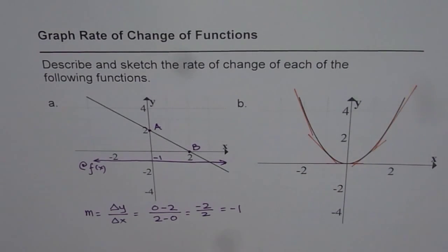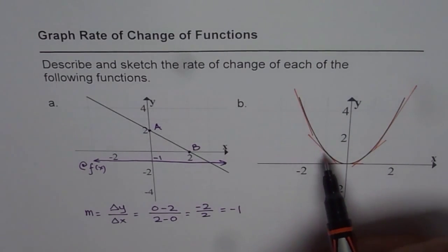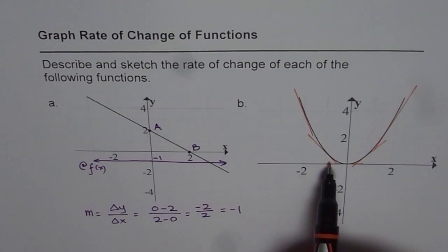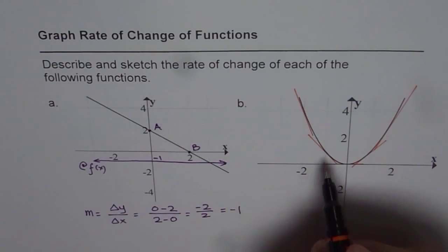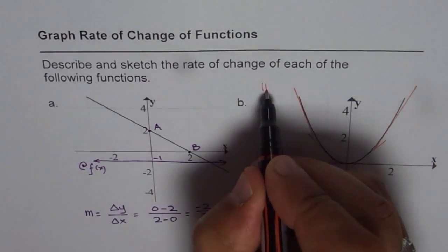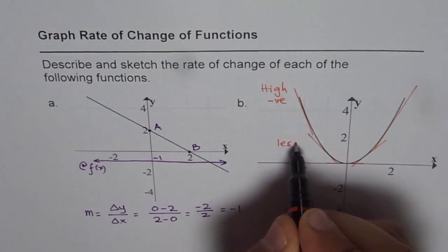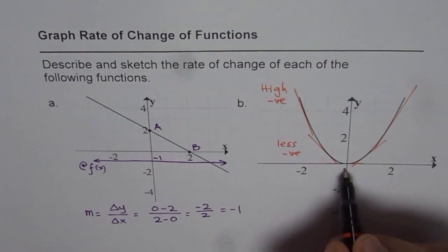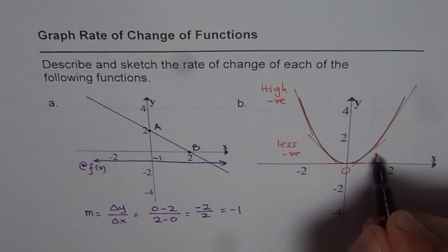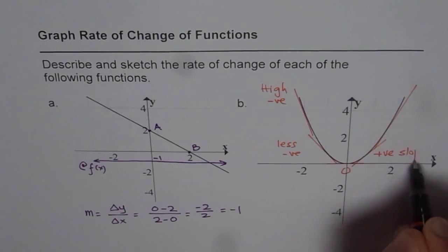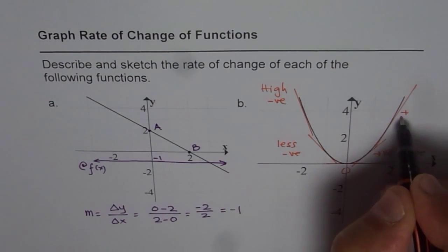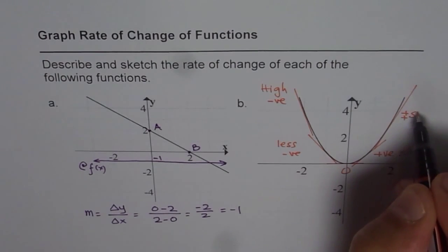As you can see here, tangent is negative. Tangent is negative still, but less negative. So it moves from high negative to less negative to zero. At this point, it's a horizontal line, the tangent is zero, and then it is positive slope, and higher positive slope.